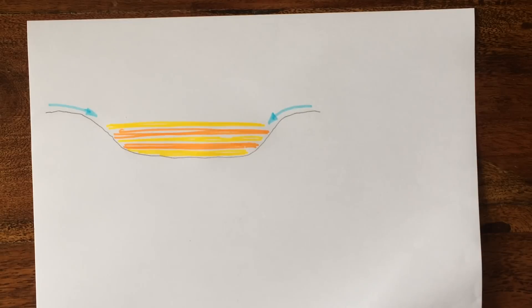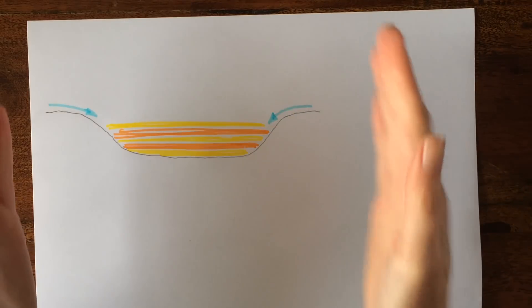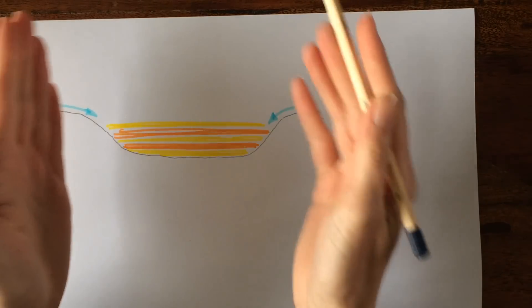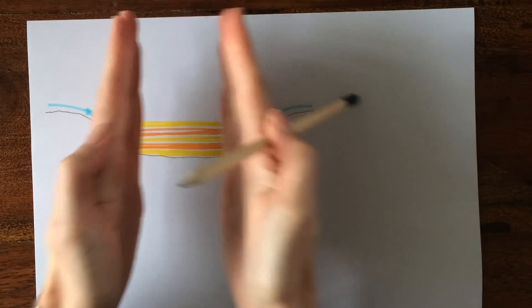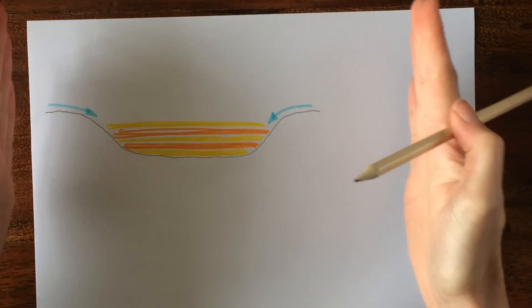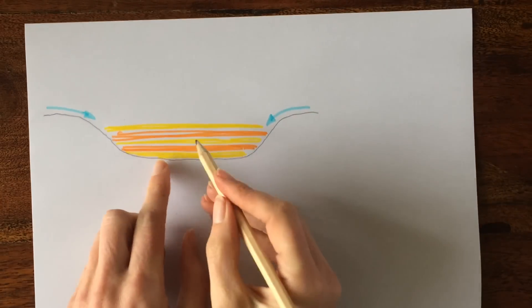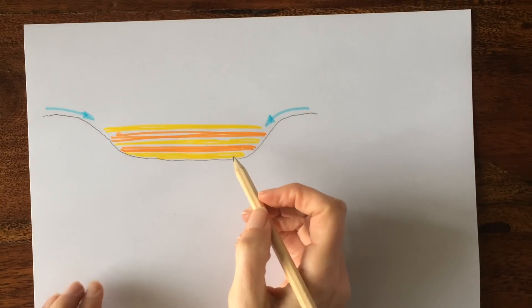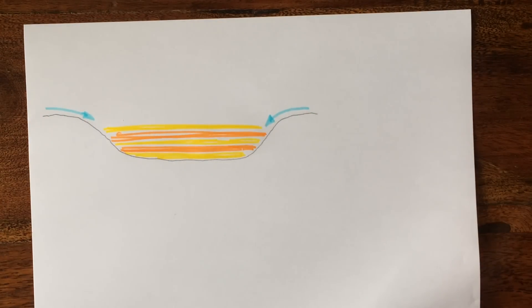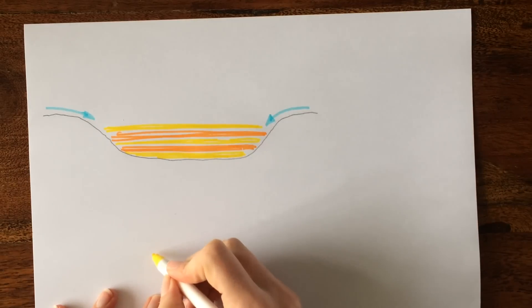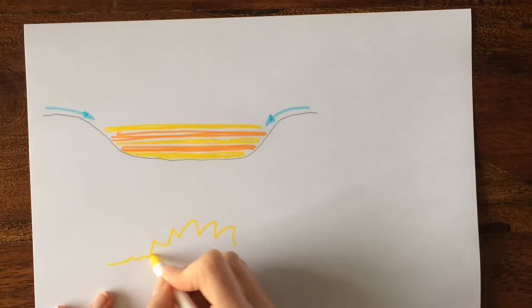Now what you've got to imagine is that this rock gets compressed together as the plates push these plates together and will crumple up these layers of rock. So what you would end up with is something that would look a little bit like this. The layer would get, let's just start the layer here.